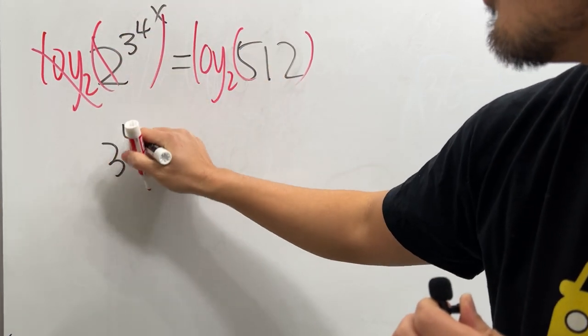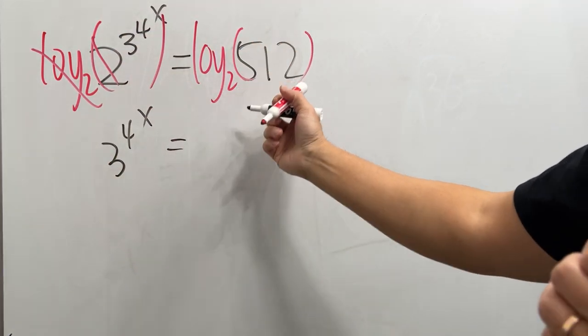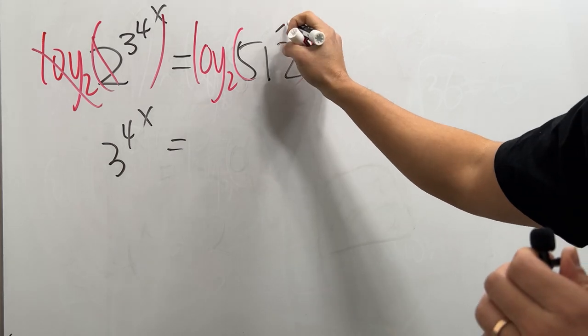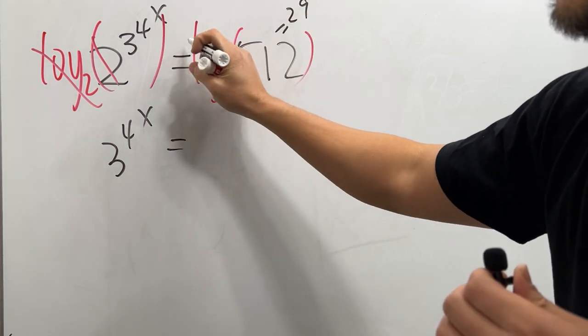And then we'll just get 3 to the 4 to the x powers equal to what's log base 2 of 512. Well, this right here is the same as 2 to the 9th power so that this and that can cancel, so we just have 9.